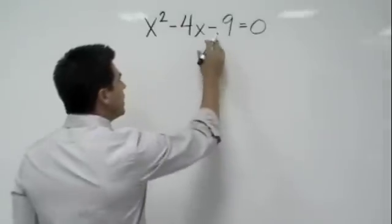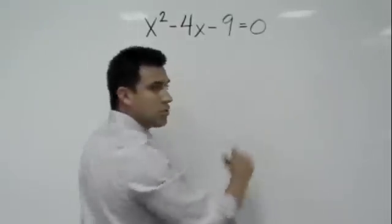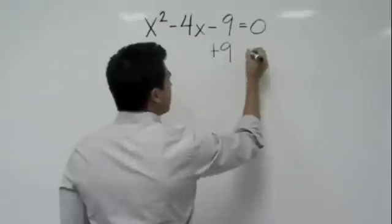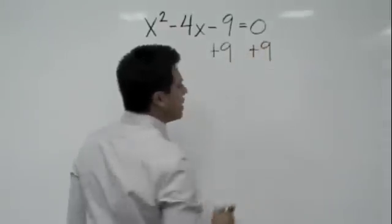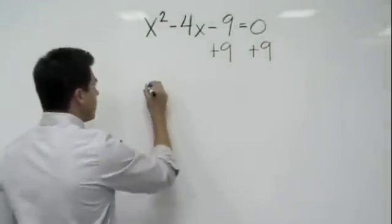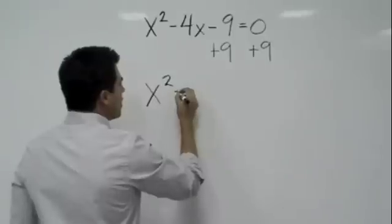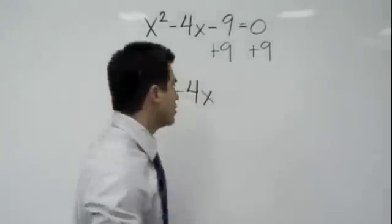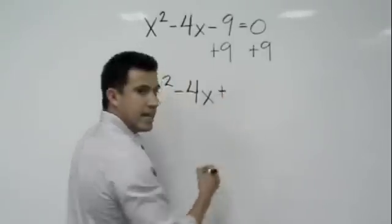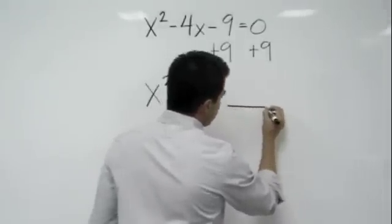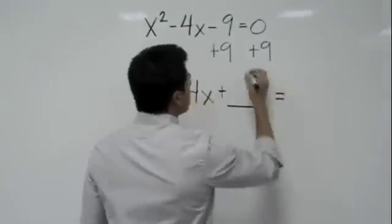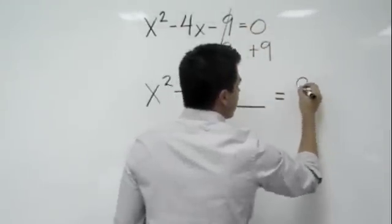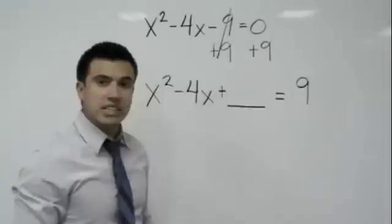Basically, what you have to do is take this 9 and put it to the other side of the equal sign. You would add 9 to both sides. Now you're left with x² - 4x, and I'm going to leave a space right here. So I'm going to put plus, and then we can leave a space, equals, remember those cancel out, and then 0 plus 9 will give us 9.